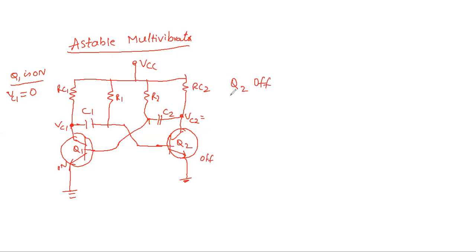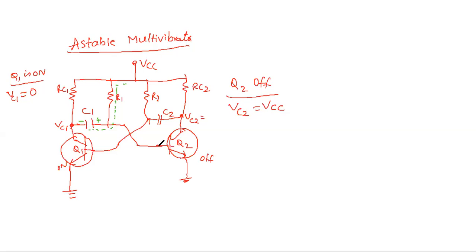Q2 is OFF, so its collector output voltage equals VCC. Now capacitor C2 has VCC and capacitor C1 has the saturation voltage. Capacitor C1 starts charging through VCC via the path through R1 and C1. The polarities of C1 become positive and negative, and it starts charging from 0, 0.1, 0.2, and so on. Since C1 is connected to the base of Q2, as the voltage rises and crosses the cut-in voltage of 0.7V, transistor Q2 will enter the ON state.